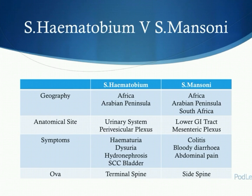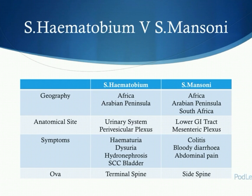To summarise and compare the two main species: haematobium involves the urinary system, with adult worms living in the perivesicular plexus. Eggs are deposited within the ureters or kidneys, resulting in haematuria, dysuria, and hydronephrosis, and it's the most common cause of squamous cell carcinoma of the bladder in sub-Saharan Africa. The terminal spine on the ova looks like the sting of a bumblebee. Mansoni lives in the lower GI tract with adult worms in the mesenteric plexus. Symptoms resemble inflammatory bowel disease — colitis, bloody diarrhoea, abdominal pain. The spine on the ova is on the side, like the dorsal fin of a fish. Treatment for both is a one-off dose of 40mg per kilogram of praziquantel.